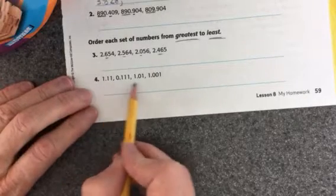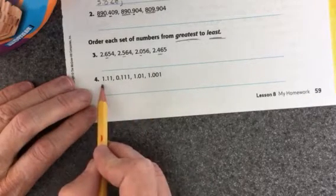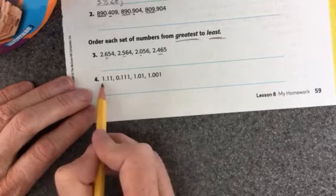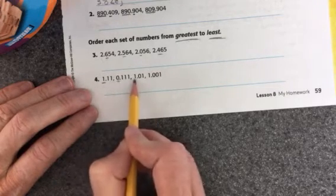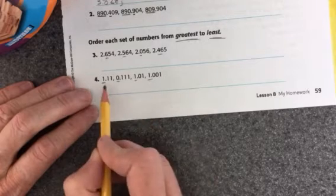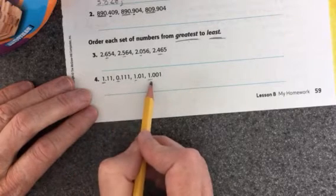Okay, right here. This looks like somebody's trying to trick somebody else with all these ones and zeros. So you're going greatest to least. You're going to want to look in the ones place. You have a 1, a 0, a 1, and a 1 in the ones place.